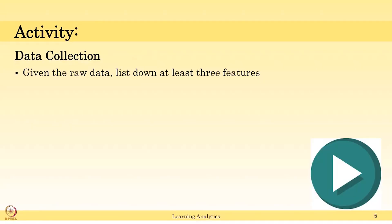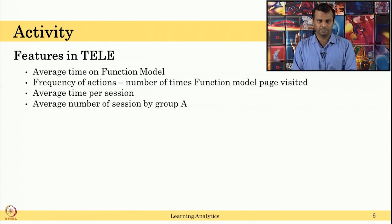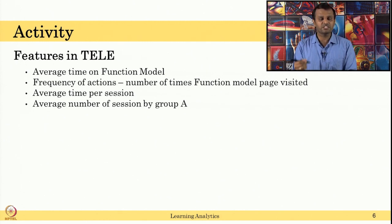Let us think about it and do a small activity. Given the raw data you saw in the last two slides, can you list down at least three features? Please pause this video, write down your answers, and resume to continue. One feature in tele can be the average time on the functional model. For example, a student uses Metal for multiple sessions and may move around the functional model, qualitative model, and quantitative model multiple times. What is the average time a student spent on the functional model? That can be the feature. To compute it, you have to use a simple Excel sheet. You have to define the student ID and compute when the student used the functional model, using the timestamp data to compute the average.